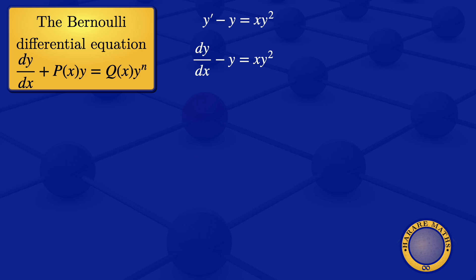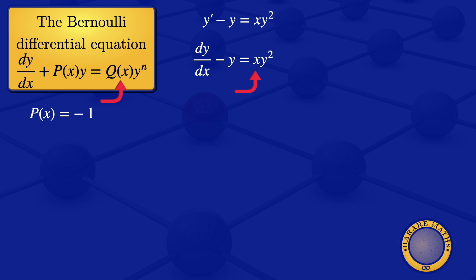By comparing these two equations, we see that the coefficient of y is p, and here the coefficient of y is minus 1, so p(x) equals minus 1. On the right hand side we have q(x), and here we have x, so q(x) equals x. The power to which the dependent variable y is raised is 2, so n equals 2.